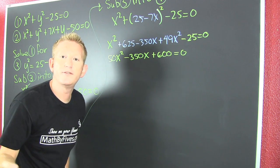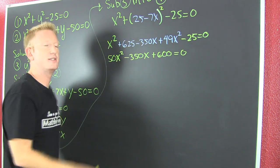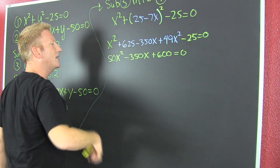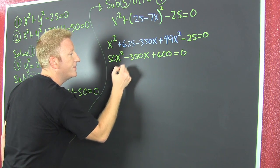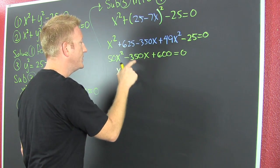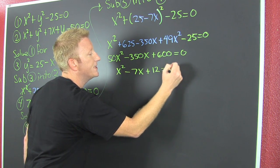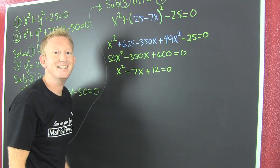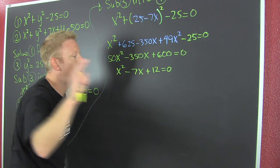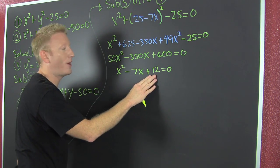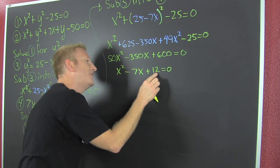Now I want to factor but first let's make our numbers smaller and we'll do that by dividing everything by 50. So then I have x squared minus 7x plus 12 equals 0. Nice numbers.